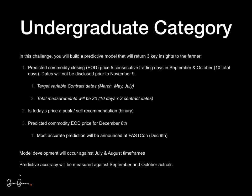In the Undergraduate category, you have access to the data available to the Novice category, but we expect predictive modeling. The first model we would like is predicted price of the commodity close — you'll see that close price is in the datasets. There are three different datasets based on different contract dates: March, May, and July. We would also like, for each of the dates, a sell versus hold recommendation, and finally a predicted commodity price for December 6th. The most accurate teams will be announced at FASCON on December 9th.